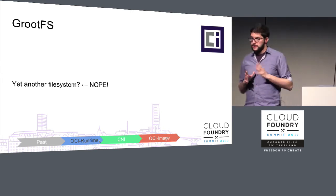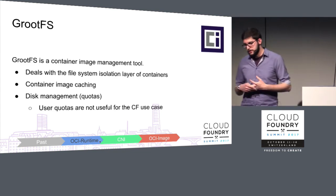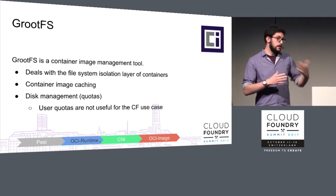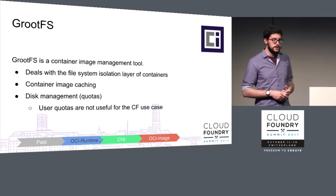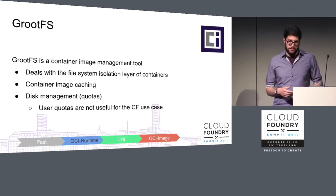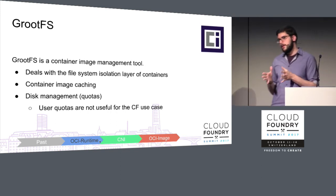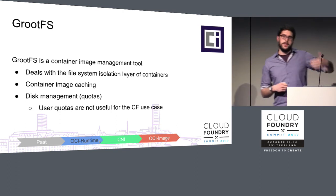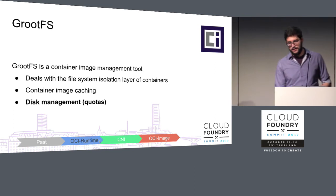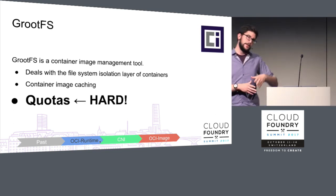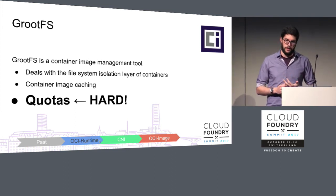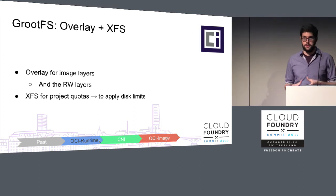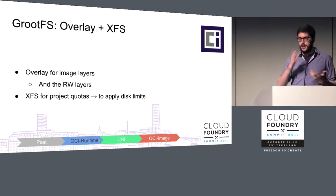GrootFS is not a file system despite its name — we like to call it a container image management tool. It deals with file system isolation so each container gets its own isolated file system, handles caching of container images so you don't download the same image twice, and handles disk quotas. Cloud Foundry has the peculiarity that it cannot use user disk quotas because all containers use the same vcap user, so it must use directory-based quotas. After a few iterations — starting with BTRFS which didn't scale well — we ended up using XFS for disk quotas due to its mature project quota implementation, and overlay for layers and layer caching.